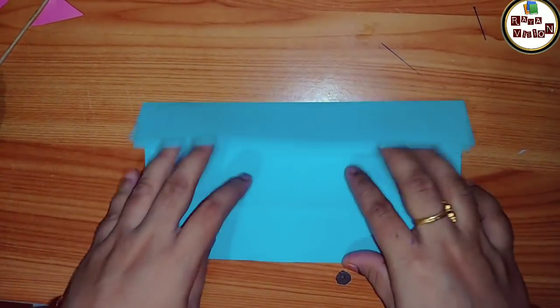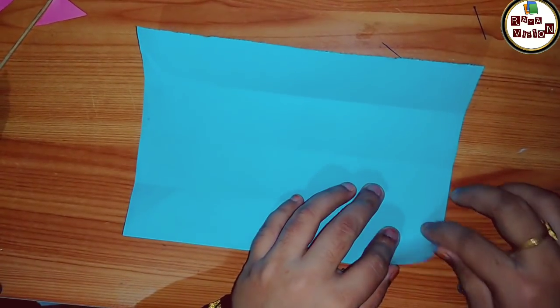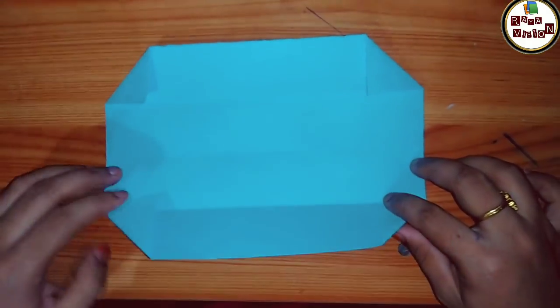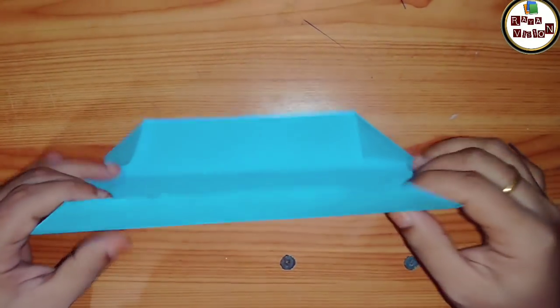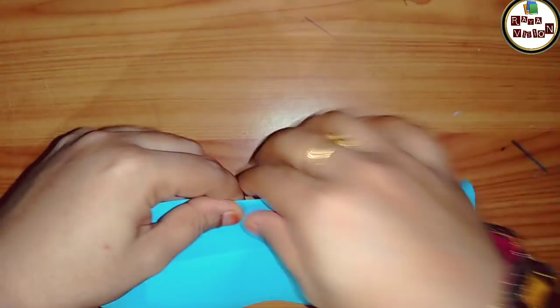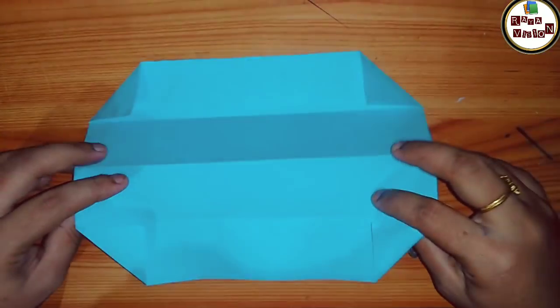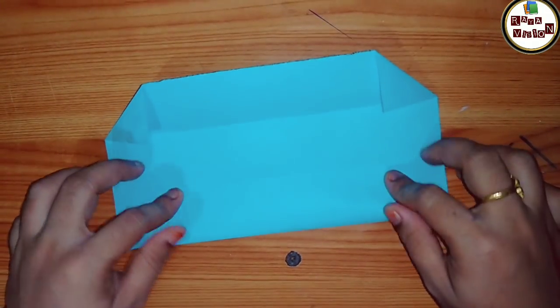While doing all the folds, you have to press it gently. Now take one triangle and fold one triangle from one edge. Do the same in all four edges. Now just give a twist in the middle.